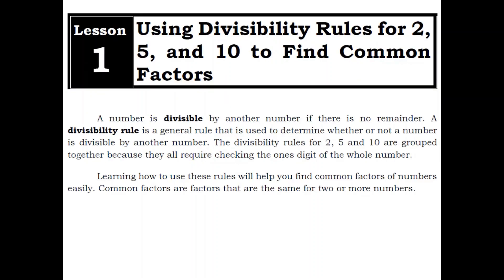Lesson 1: Using divisibility rules for 2, 5, and 10 to find common factors. A number is divisible by another number if there is no remainder. A divisibility rule is a general rule used to determine whether or not a number is divisible by another number. The divisibility rules for 2, 5, and 10 are grouped together because they all require checking the 1's digit of the whole number. Learning how to use these rules will help you find common factors of numbers easily.